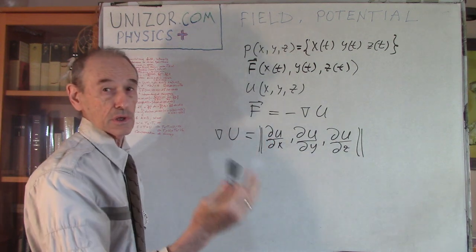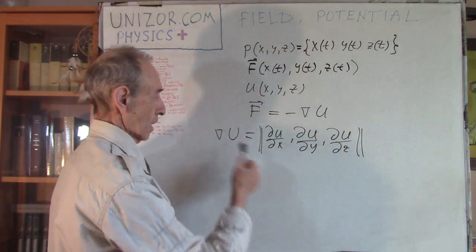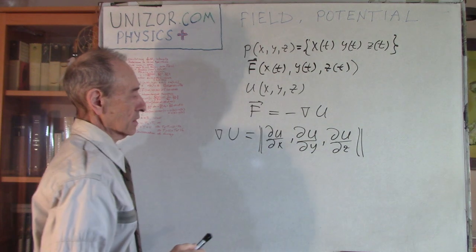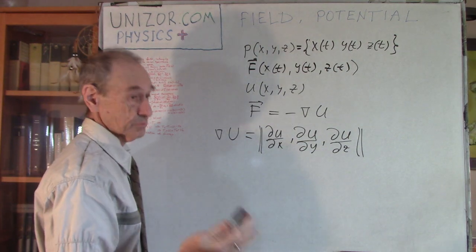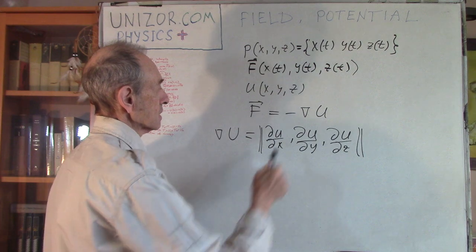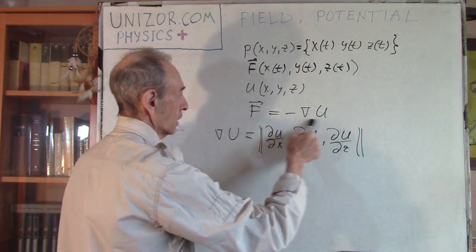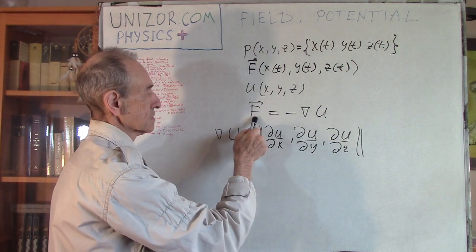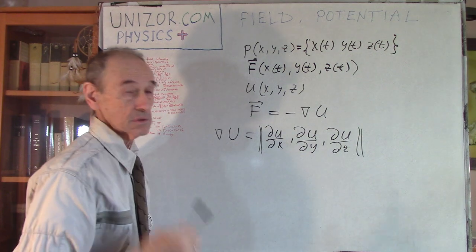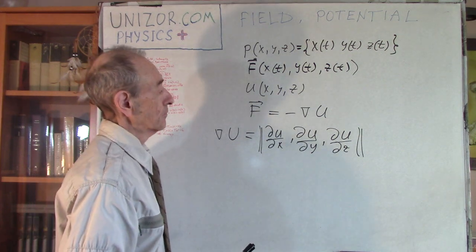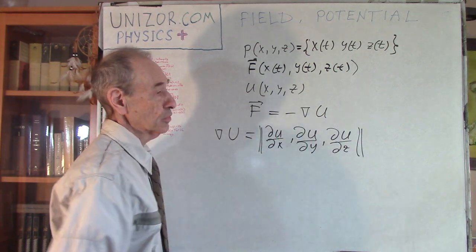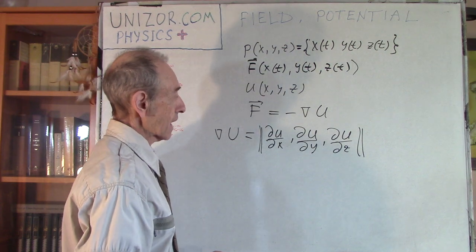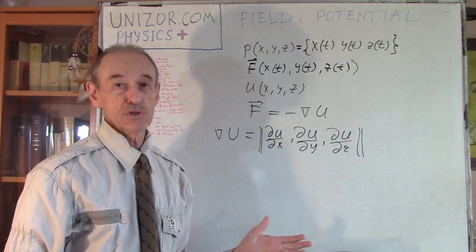U is still a function of x, y, and z - you assume U is a function of x, y, and z at any point inside the field. So if you have this particular equation between the force and some scalar function U, which we call the potential, then it is a field. That is the definition of the field.